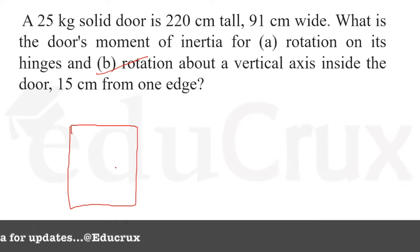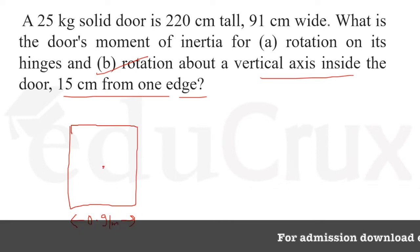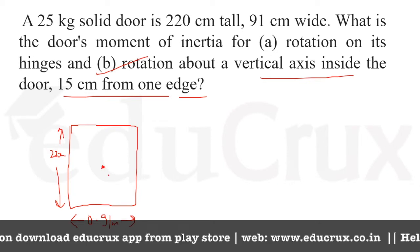For Part B, we first find the center of mass of the door. Since it is a symmetrical door with uniform mass distribution, the center of mass is at the middle of the width. If the width is 91 cm, the center of mass is at 91/2 cm from either edge.